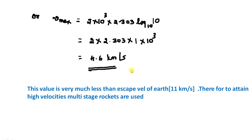Now one may ask: when a rocket is launched with such a low velocity of 4.6 kilometers per second, can it reach its destination? The escape velocity of the earth is very much larger than 4.6 kilometers per second. Therefore, with this design, you cannot launch a rocket or satellite. The initial velocity needs to be enhanced, since the minimum velocity to escape from the earth's atmosphere is 11 kilometers per second.